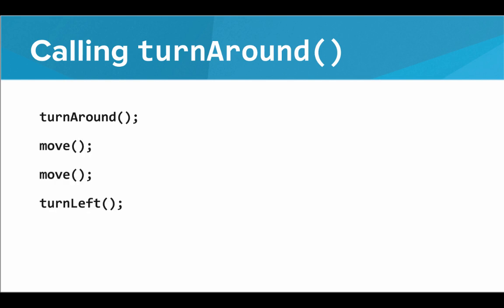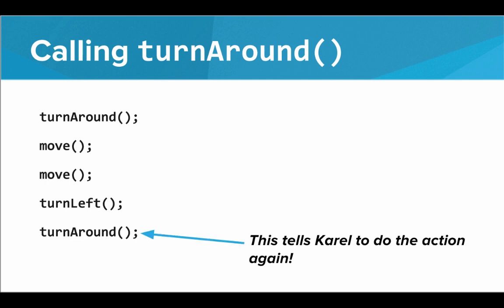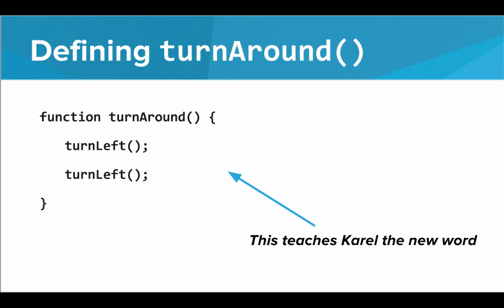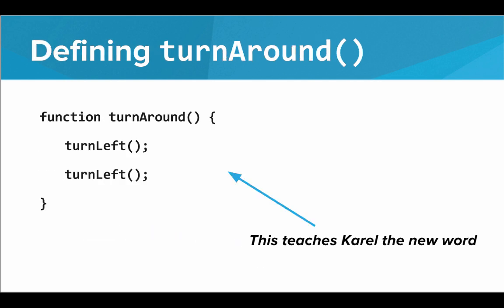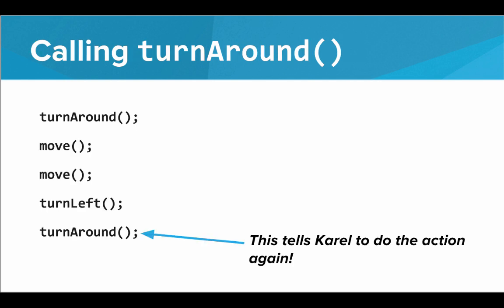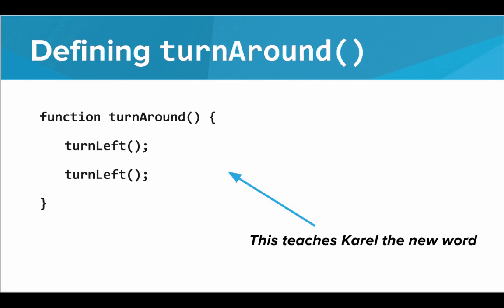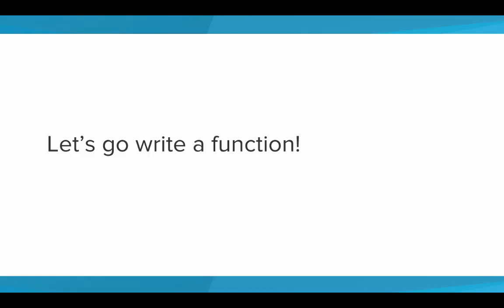We can add some more commands and then call the function again — this tells Carol to do the action again. We can call a function as many times as we want. We can only define a function once. This is how we define a function, and this is how we call a function. We define it by giving the instructions for how the command should work, and we call it by actually telling Carol to carry out the command. So with that, let's go write a function.